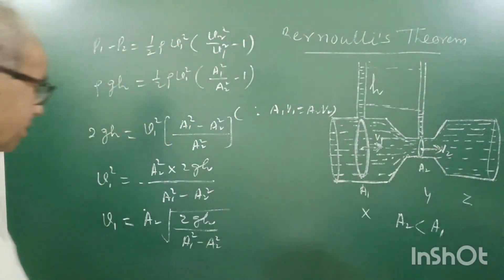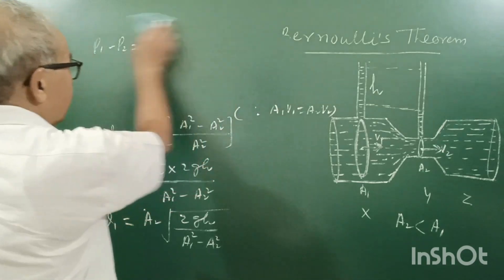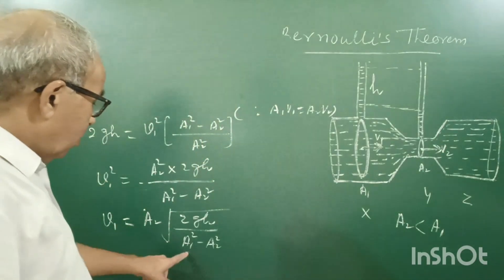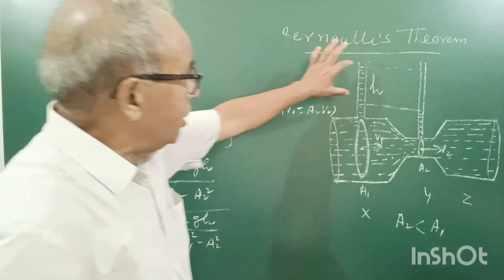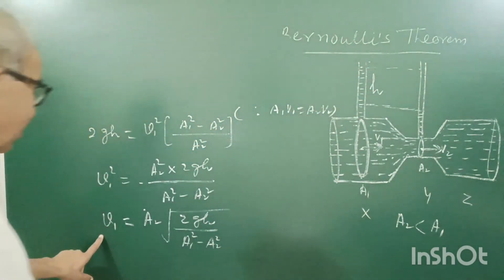So, V1 is the velocity of liquid in the pipe. Actually, A1, A2 will be known for the pipe. Only by measuring pressure difference, we can find out V1.